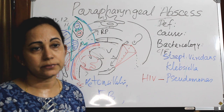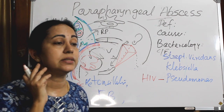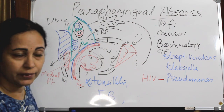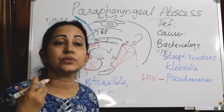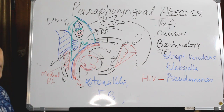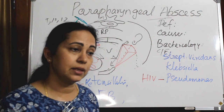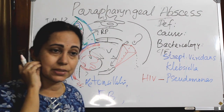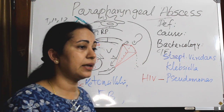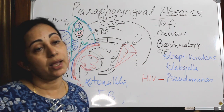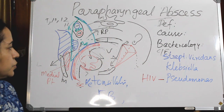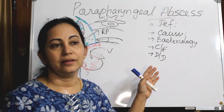If the abscess causes lateral bulge, there will be a firm, tender, fluctuant swelling in the neck — unlike quinsy, where the jugulodigastric lymph nodes are enlarged. Additional clinical features include trismus (difficulty opening the mouth), dysphagia, drooling of saliva, fever, severe tiredness, and myalgia.